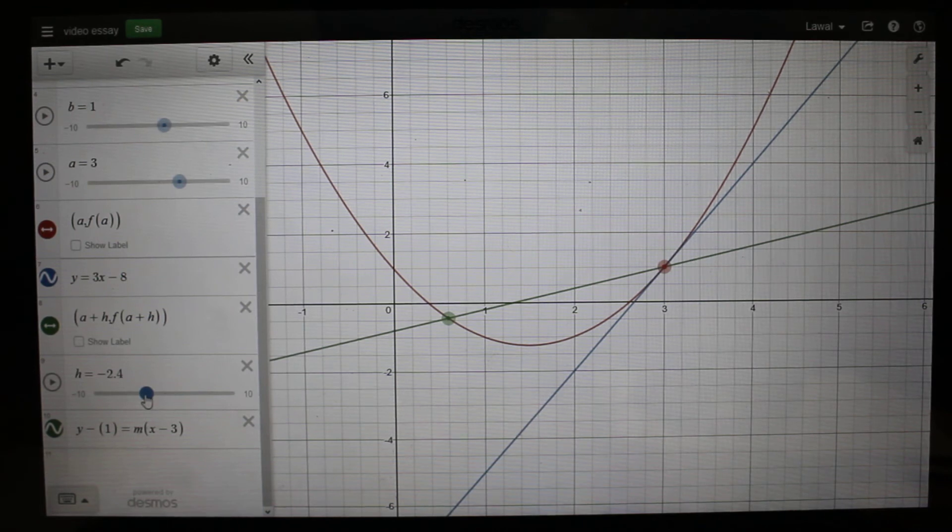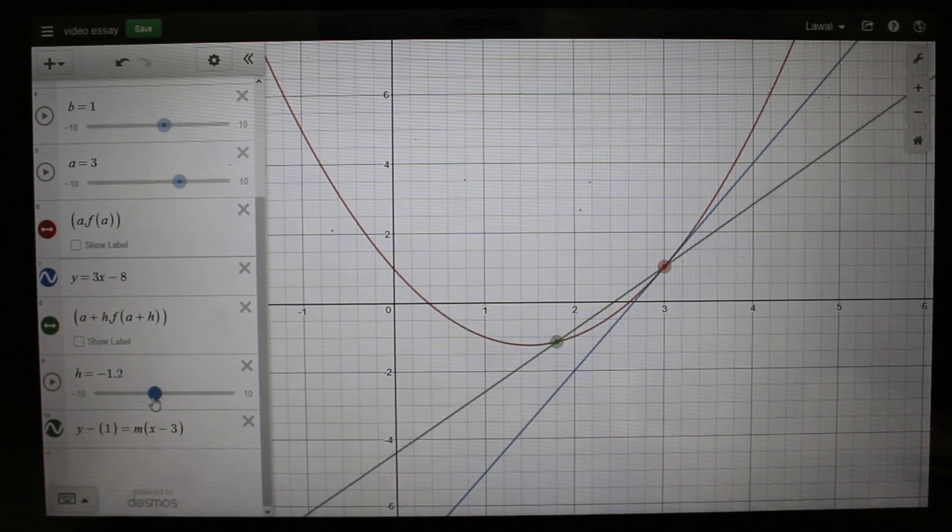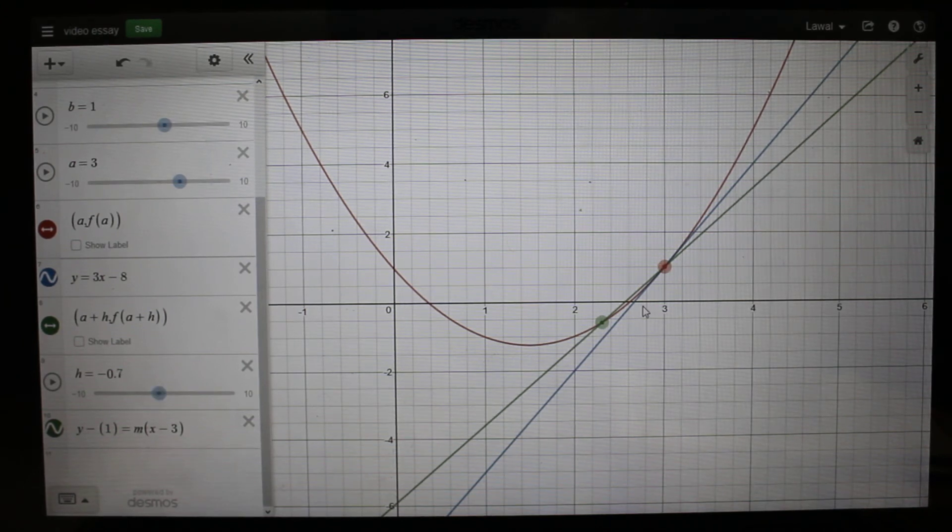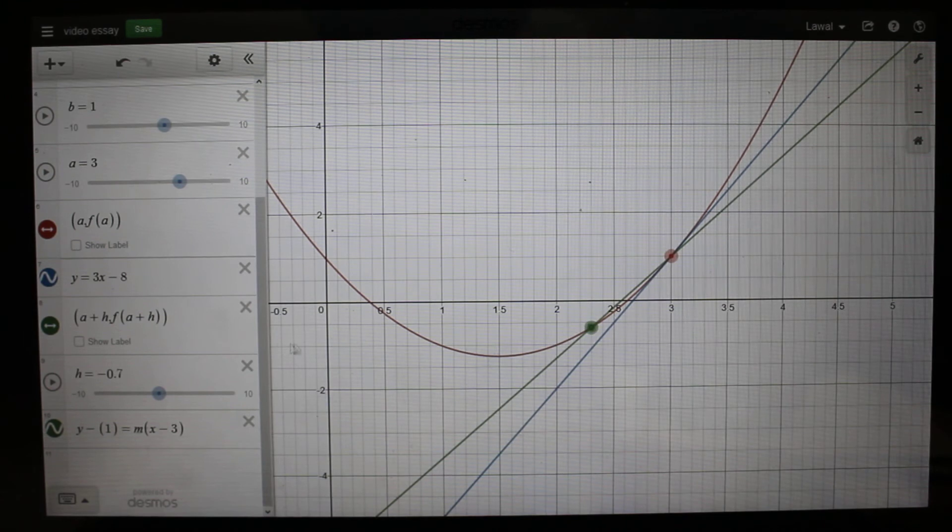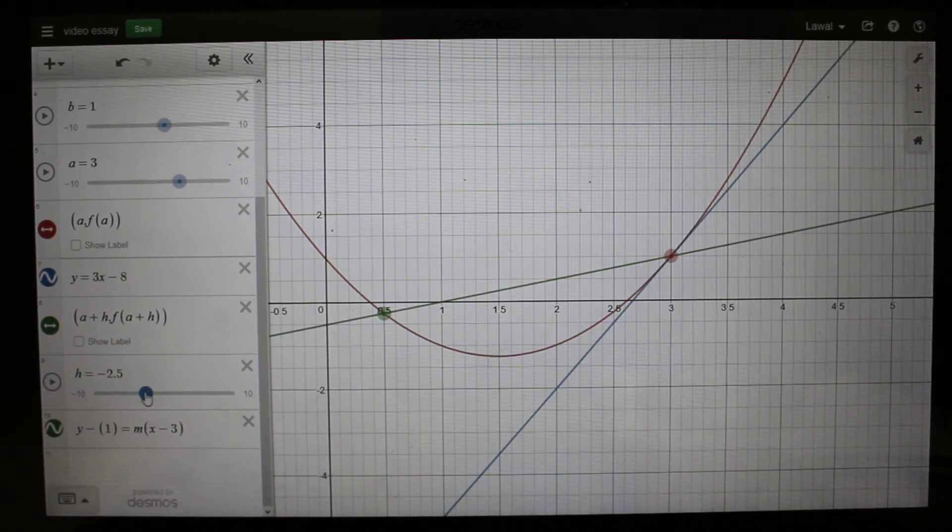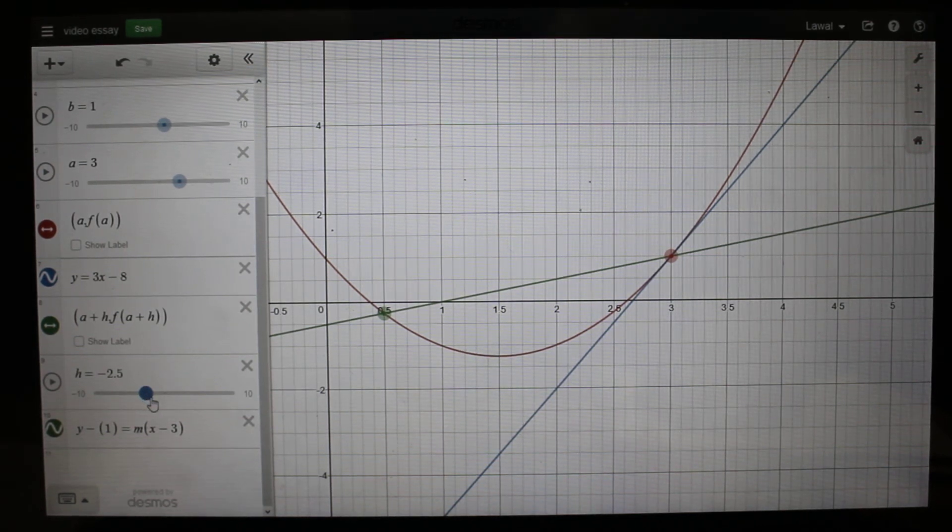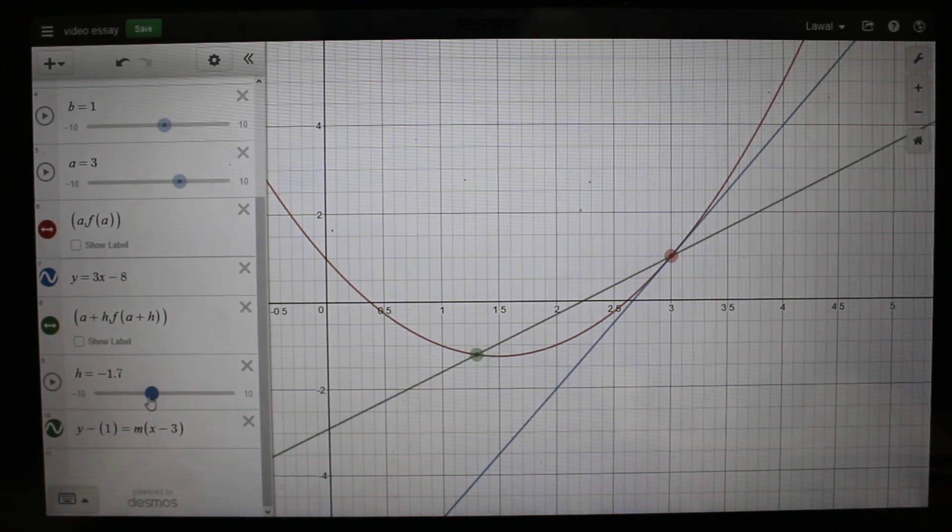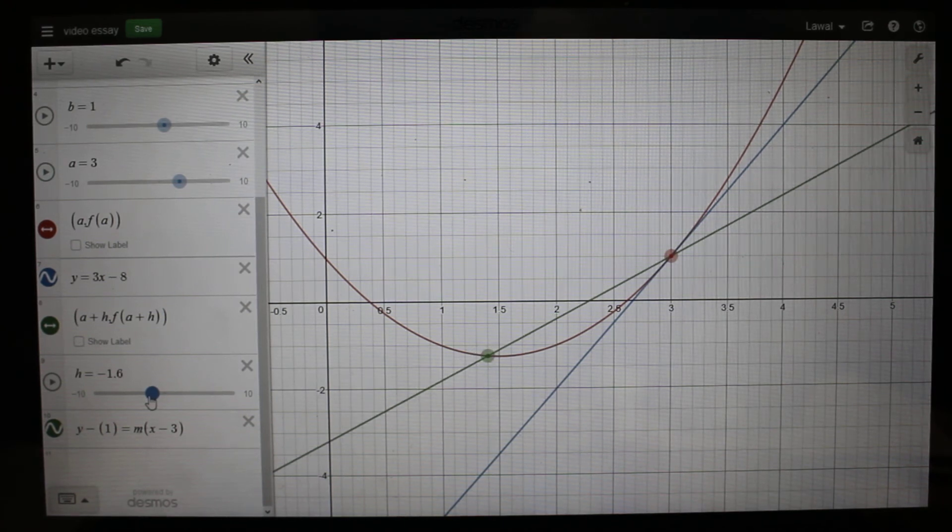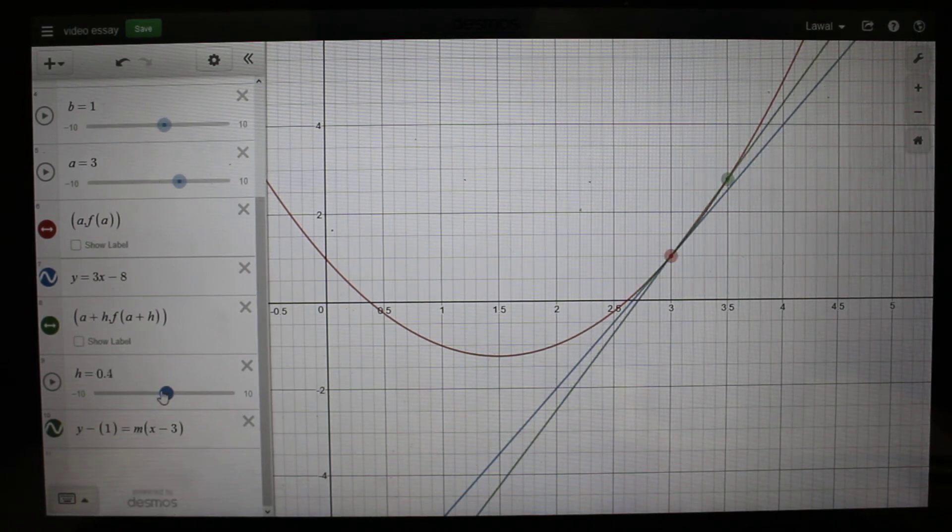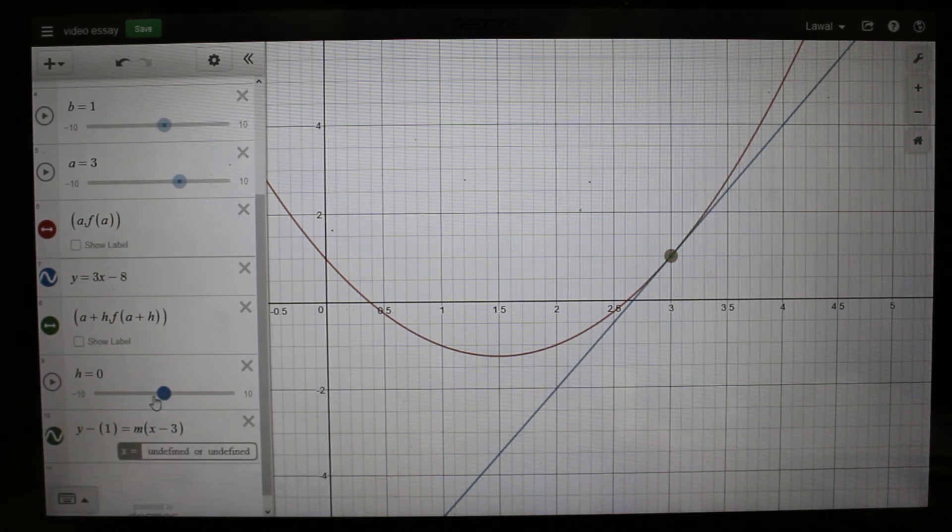As we move the slope of the h, you can see that the secant line is reducing. At first the secant line was much larger because of the distance between them, but as we reduce the amount of h put into the equation, we can see that on our slider the secant line reduces and as it gets towards the slope of the tangent you can see that it kind of overlaps.